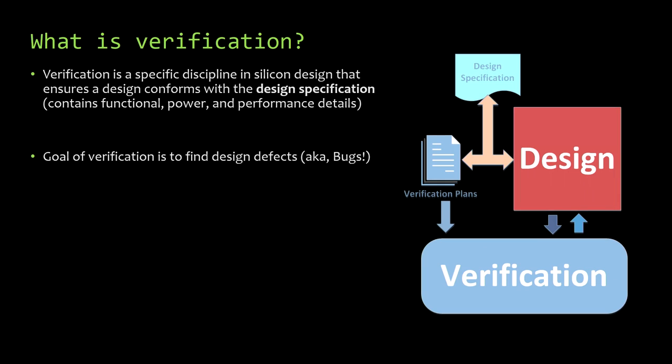Verification is a discipline within silicon design that ensures a design matches a specification. When hardware and CPUs develop, you don't just have a functional specification — you also have a performance specification and a power specification, and those all need to be tested in the same way. If you build a processor and it's slower than you were expecting it to be, it's just as worthless as if it had a bug. The goal of verification is to find defects, and like with many things, the earlier you find the bug in the design process, the cheaper it is to fix.